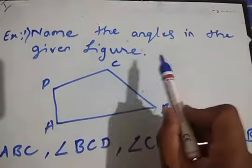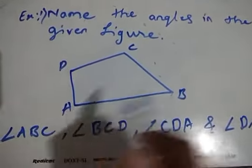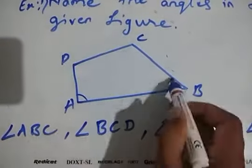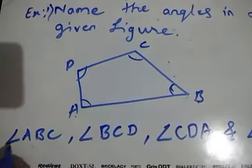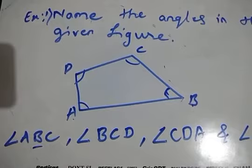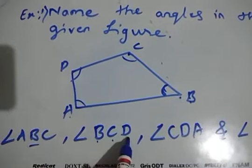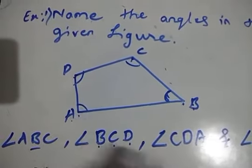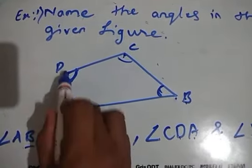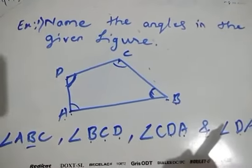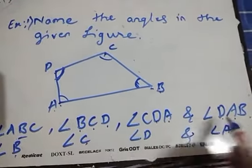Now let's study an example: name the angles in the given figure. A quadrilateral with vertices A, B, C, D is given. We have angles at A, B, C, and D. For angle B: angle ABC, with B in the middle. For angle C: angle BCD. For angle D: angle CDA. For angle A: angle DAB. Alternatively, we can name them simply as angle B, angle C, angle D, and angle A.